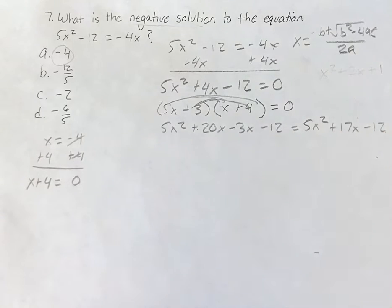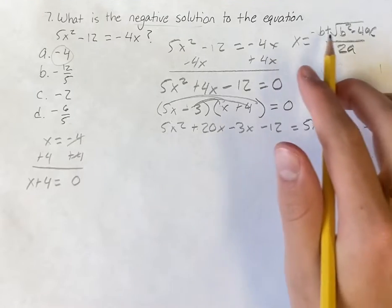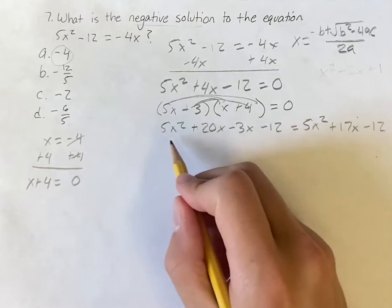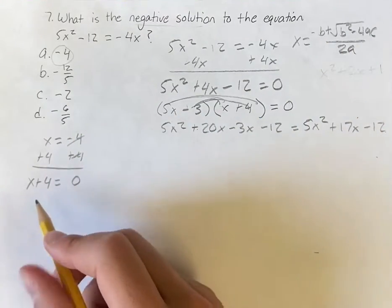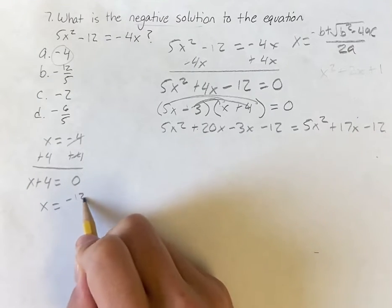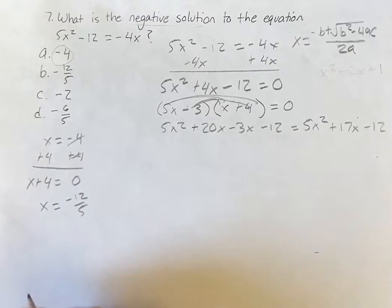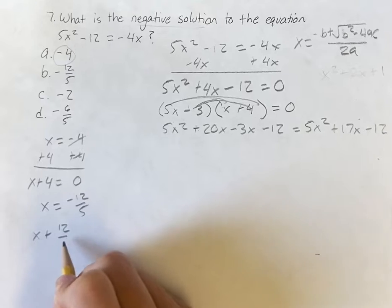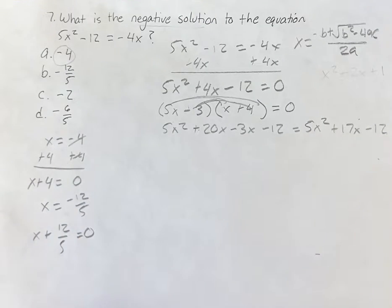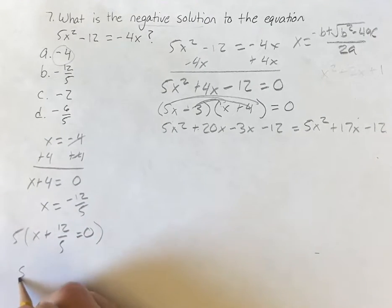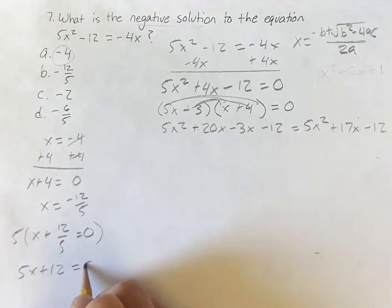Now this might seem like it's taking a lot, but that's just because I have to explain the concepts. If you actually just started from this point, it's going to be a lot quicker than doing the quadratic formula. Okay, so we have negative 12 fifths. What is that going to look like? If we add to both sides, x plus 12 fifths is equal to 0. If you multiply everything by 5, you get 5x plus 12 is equal to 0.